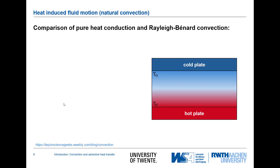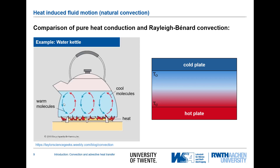Now let's switch: the lower plate is hot and the upper plate is cold. An everyday example of this is a water kettle, where a heater is at the bottom. The warm molecules are lighter than the cold ones, so they rise up and the colder liquid goes down, creating a natural movement of the liquid inside the kettle. This mechanism is called natural convection, which we will discuss in more detail in the convection lectures.